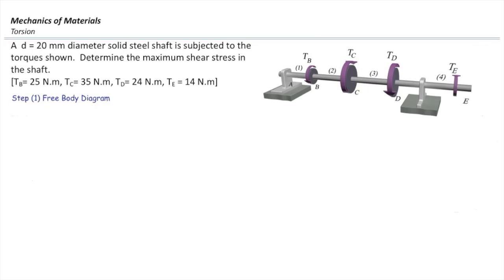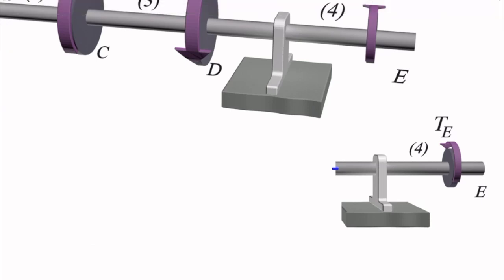Let's use the free body diagram starting with shaft 4, the shaft on the right side. To determine torque in that shaft, I need to cut it and consider the right side. I'm going to replace torque Te with the double arrow. Using the right-hand rule — bend your fingers toward the direction of the given moment — the thumb goes to the left, so I replace it with a double arrow pointing to the left. At the cut section, the unknown torque must also point to the left because it goes outward from the surface. So both arrows point left in this case.